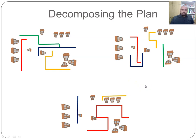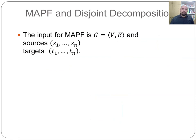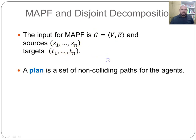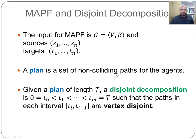Formally, what is this disjoint decomposition? The input for multi-agent pathfinding is a graph consisting of vertices and edges, a list of sources for the agents, and a list of targets for the agents. A plan for multi-agent pathfinding is a set of non-colliding paths for the agents. Given a plan of length t, a disjoint decomposition of the plan is a partition of the times between 0 and t such that within each interval, the paths themselves are vertex disjoint, as we saw in the previous example.